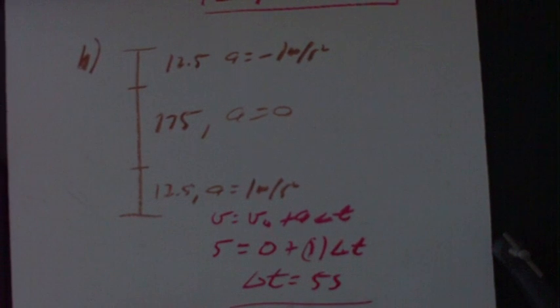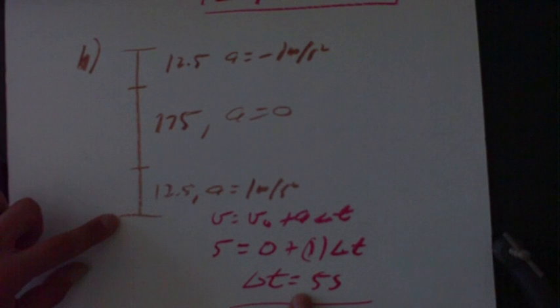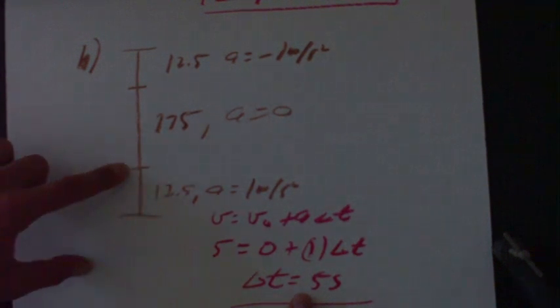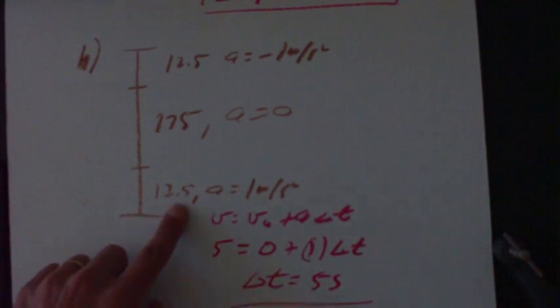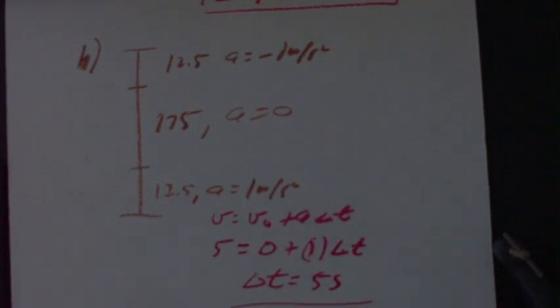So what does this five second mean? This is how long it takes the elevator in time to go from v is equal to zero to five meters per second. So there's a bunch of information here. We know how long it takes, five seconds, but we also know the distance it'll travel, 12.5.